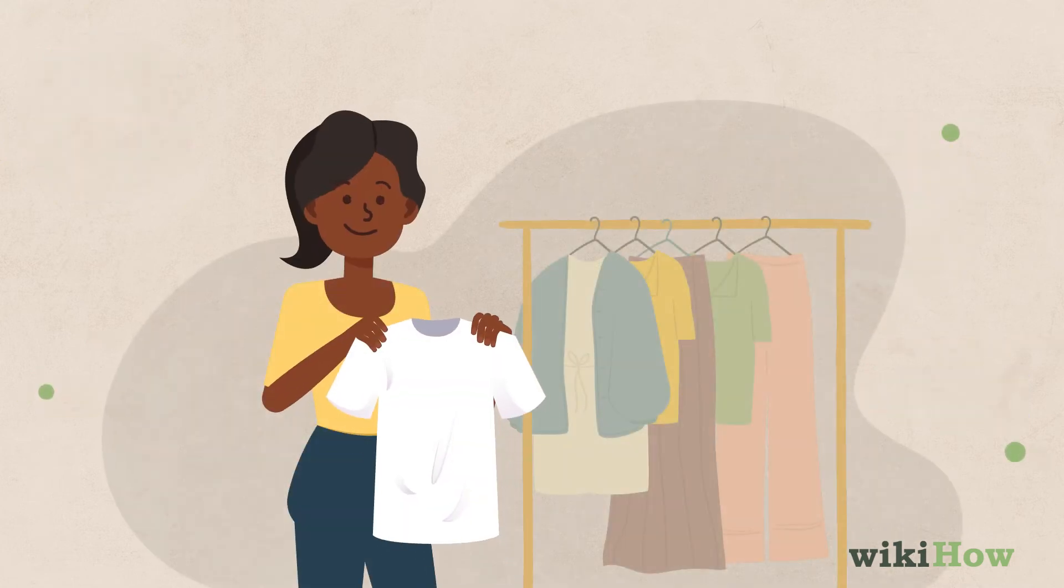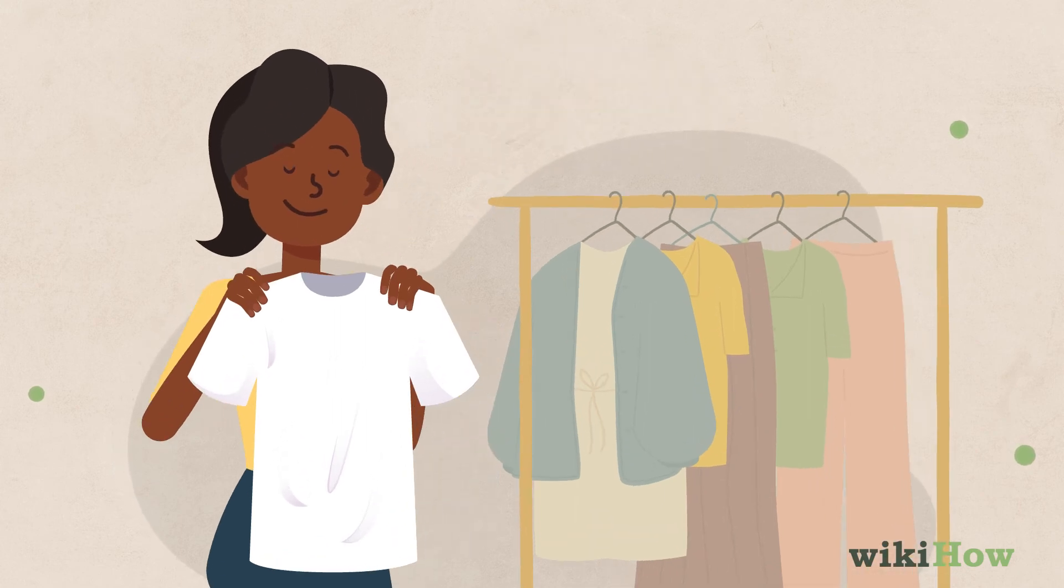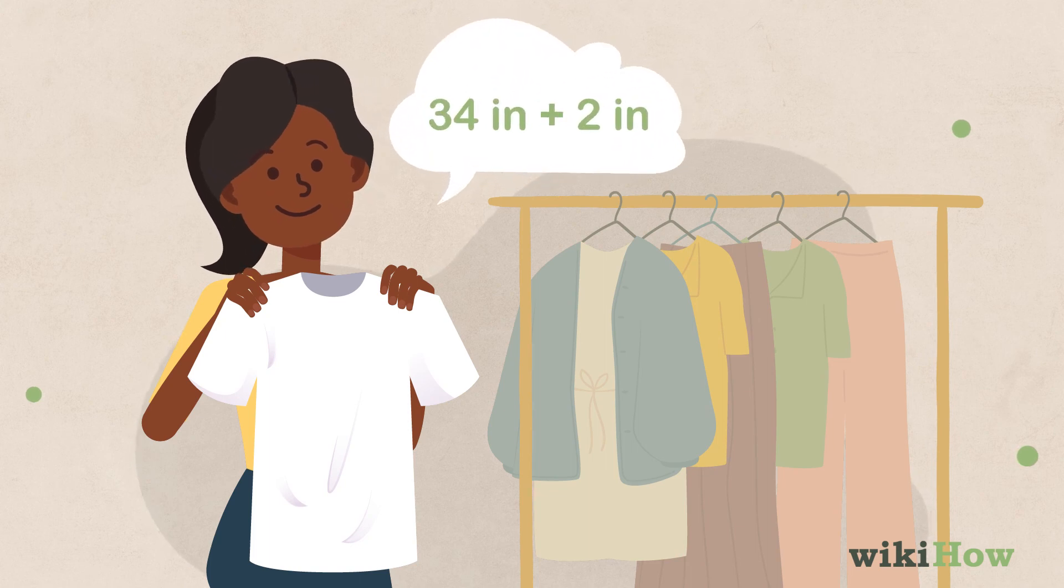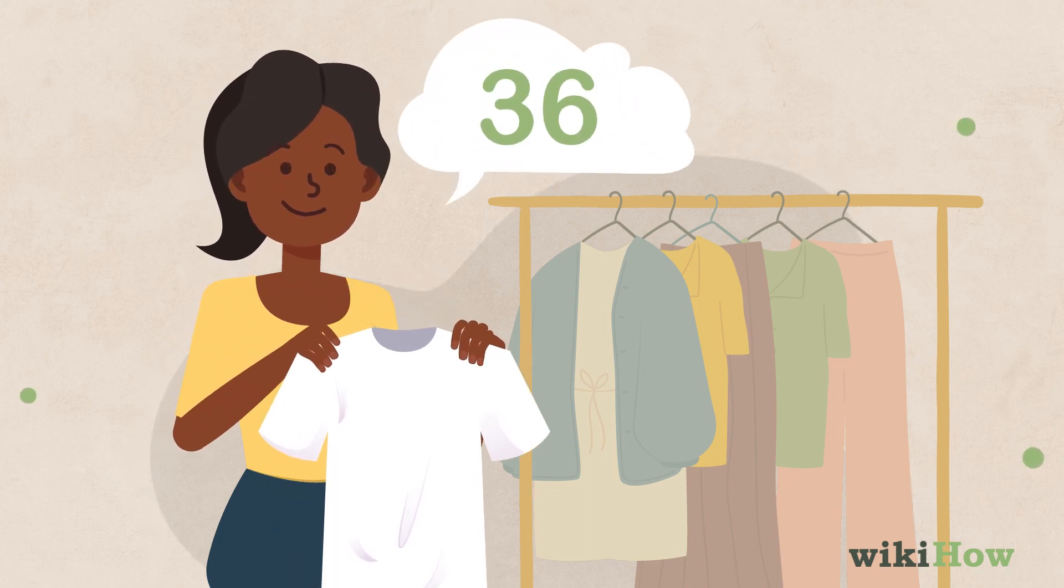When you're using your chest size to buy clothing, always round up if you fall in between two sizes. If you want a garment to fit a little loosely around your chest, add two inches or five centimeters to your chest measurement when choosing your size.